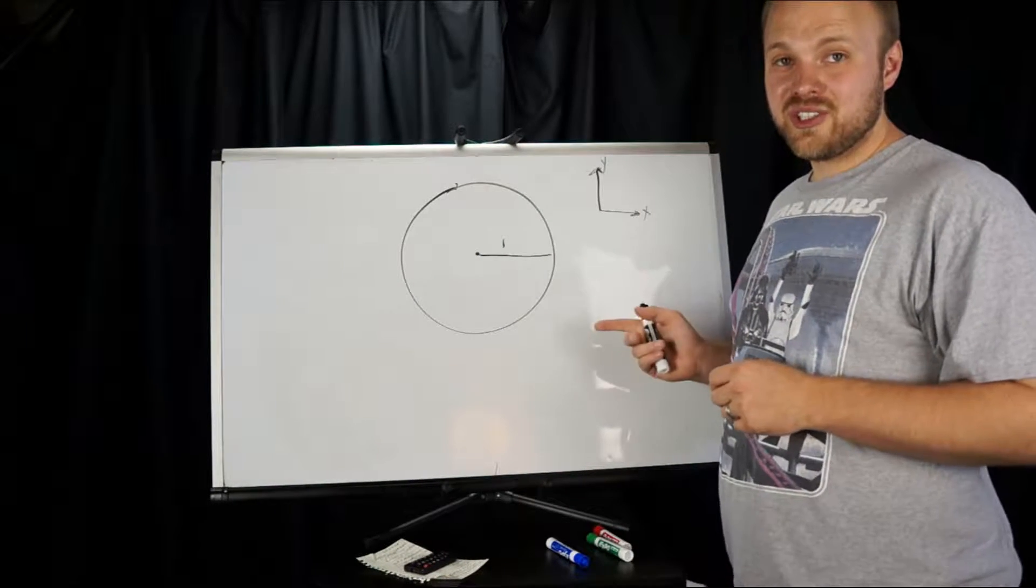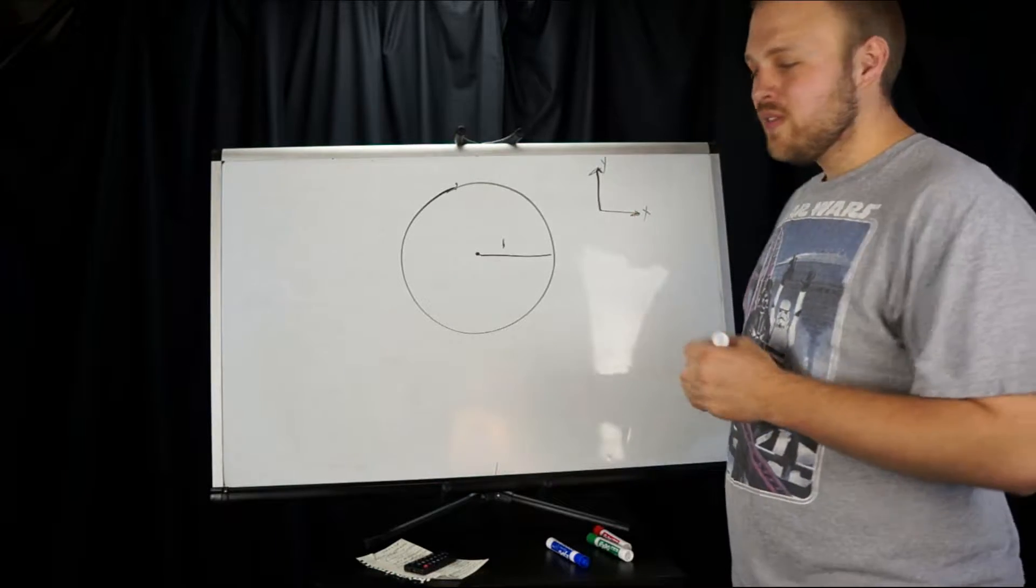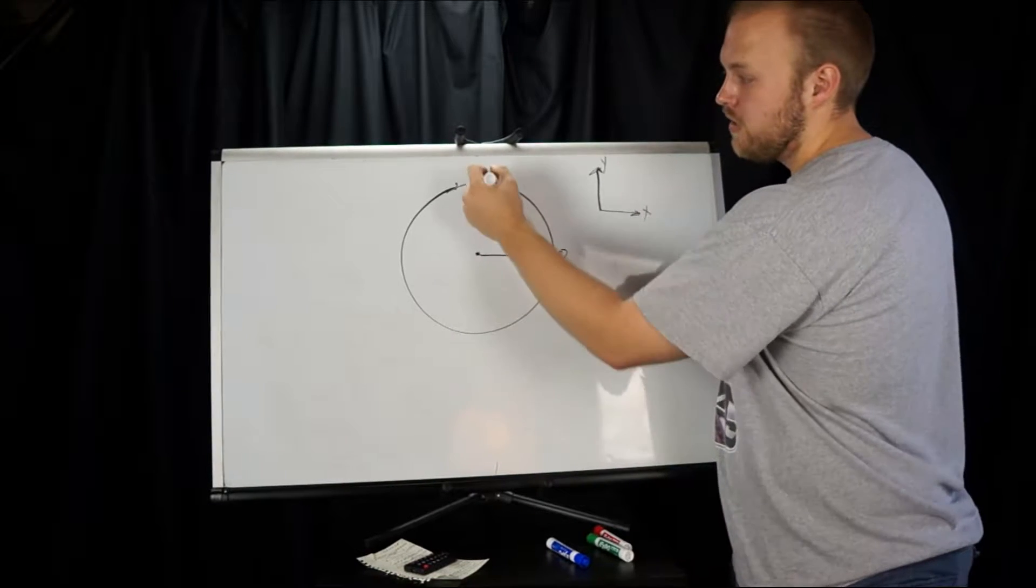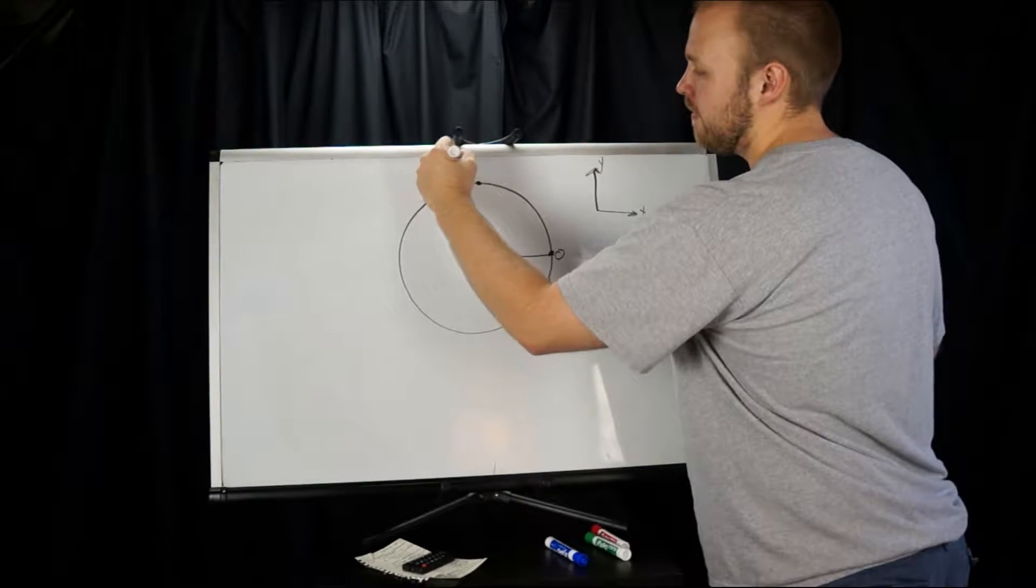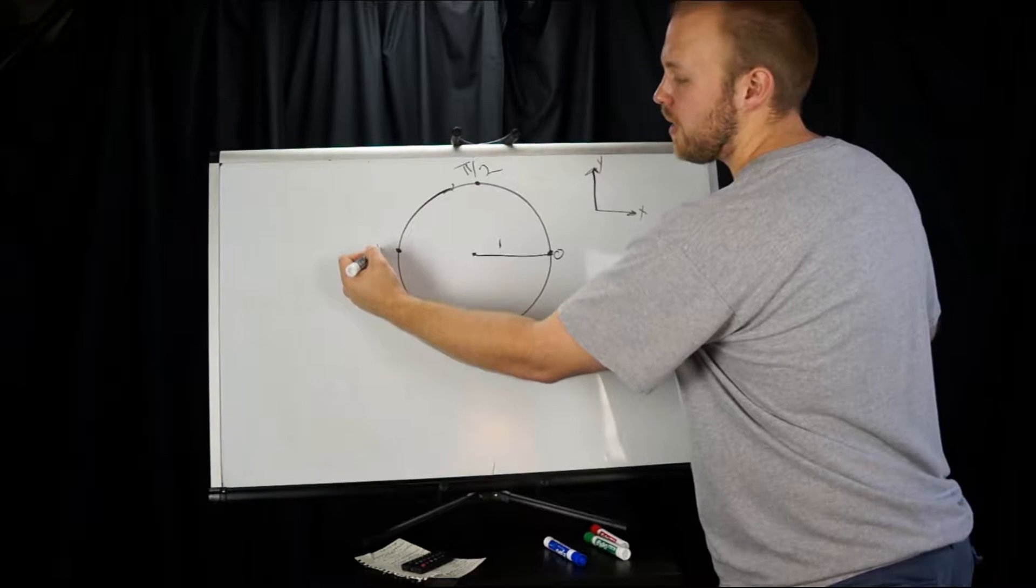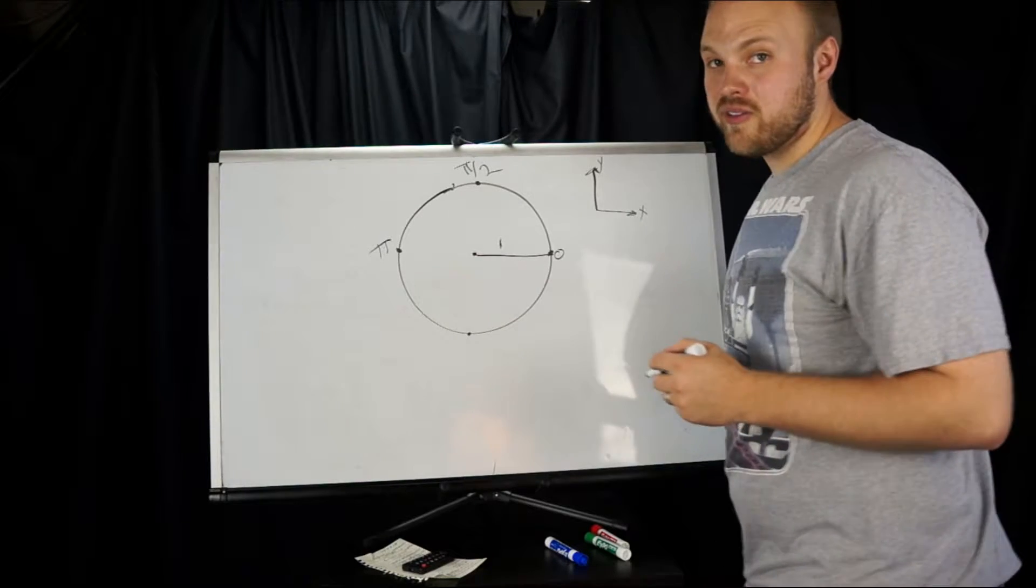Those are called Cartesian coordinates. Now if we're in a circular coordinate system, this is just going to be zero. This point all the way at the top is going to be called pi over two. Over here we've got pi, and then all the way at the bottom we've got three pi over two.